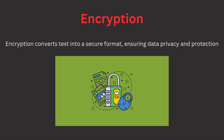Now, encryption. Encryption is the process of converting readable text into an unreadable format called cipher text, to protect sensitive information. This is important in multimedia applications, especially for secure communication where text data like messages or documents must be protected from unauthorized access. Encryption algorithms such as AES and RSA are used to encode the data. Only authorized users with the right decryption key can convert the cipher text back to readable text, ensuring privacy and security in multimedia communication.